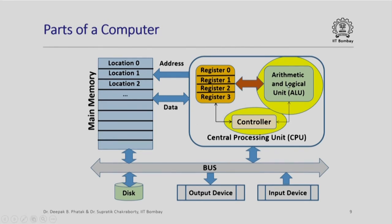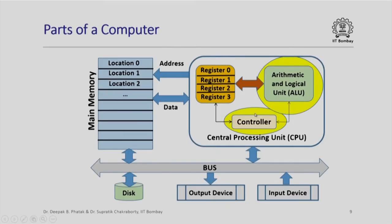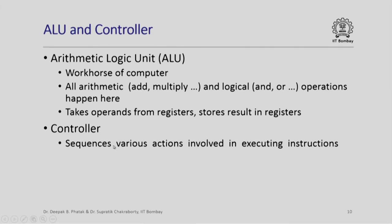The arithmetic and logic unit and the controller are also parts of the central processing unit. The arithmetic logic unit is the workhorse of the computer — all arithmetic operations like addition, multiplication, division, subtraction, and all logical operations like logical AND, OR, XOR, and complement all happen here. The ALU usually takes operands from registers and stores results back in registers. The controller has arrows going to the registers and the arithmetic logic unit, and is responsible for sequencing various actions involved in executing instructions on the computer. We will not directly see this controller as we write programs, but it plays a very central role in the functioning of a computer.